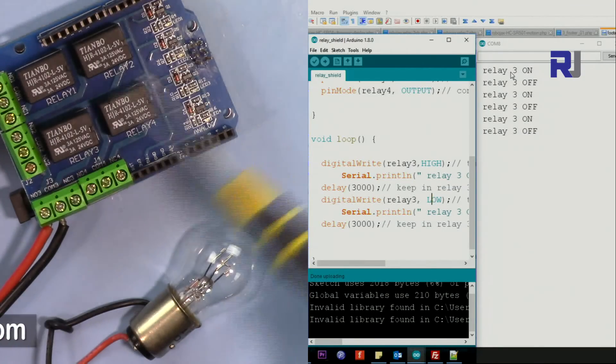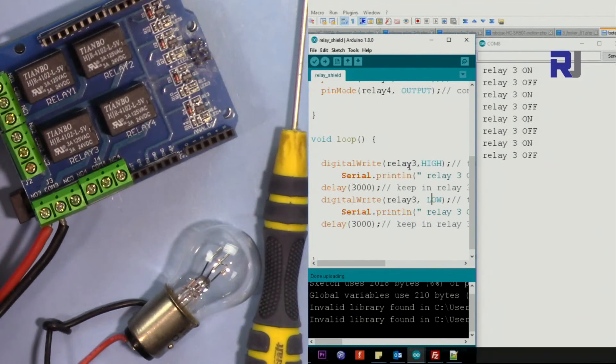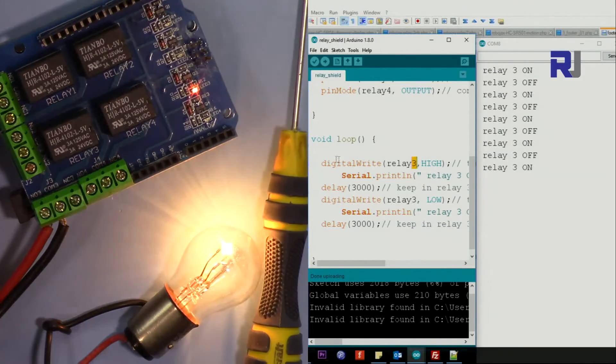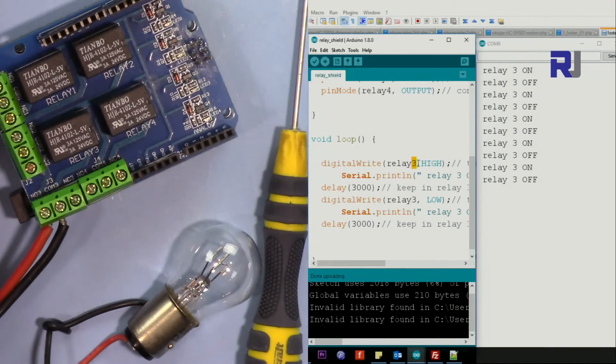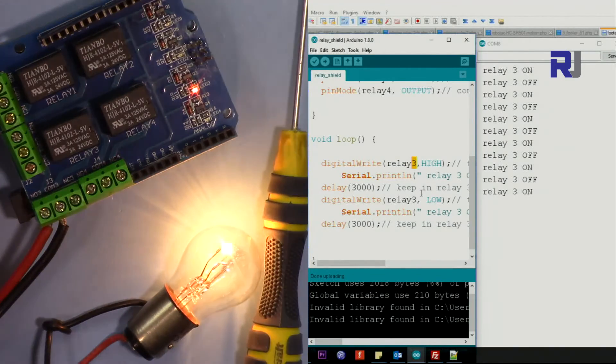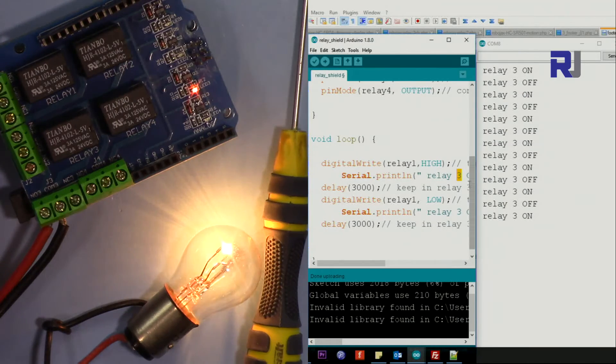So if I want to turn the relay 1 on, the only thing that I need to do is here I just need to change this relay 1, or just put multiple lines. Copy this line and paste it and change this. So let's say I want relay 1 on, and relay 1, and then off.